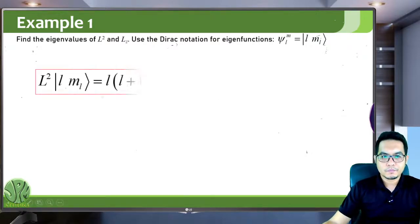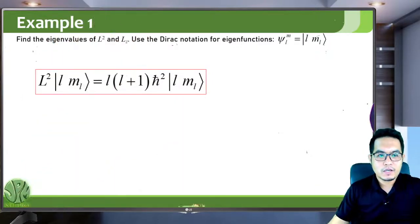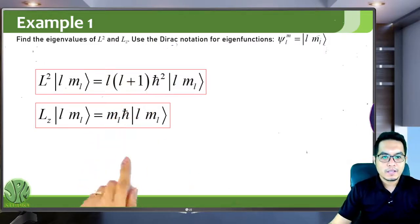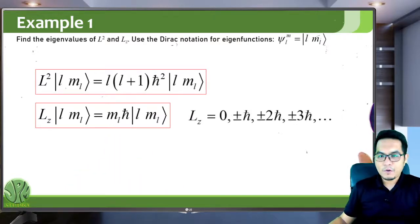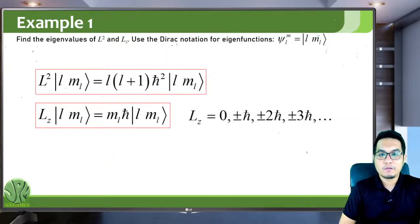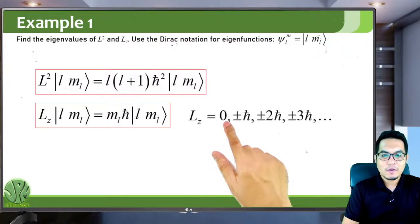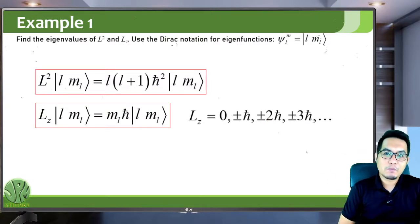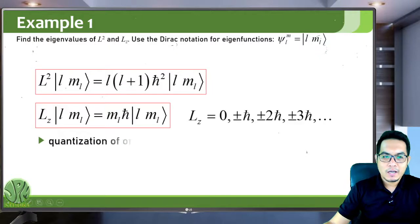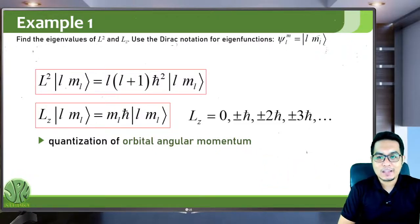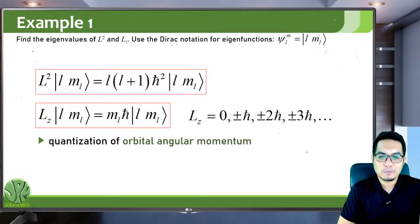In summary, the eigenvalue equation for L² has eigenvalue l(l+1) h-bar², and the eigenvalue equation for Lz has eigenvalue ml h-bar. Focusing on the z-component of the angular momentum, this means that if you measure Lz, the values you will get are either 0, plus and minus h-bar, plus and minus 2 h-bar, and so on. It is a multiple of h-bar. This is a manifestation of the quantization of orbital angular momentum — orbital angular momentum can only have certain values. It is quantized. You cannot find a value of angular momentum that is a fraction of h-bar; it must be an integer multiple of h-bar.